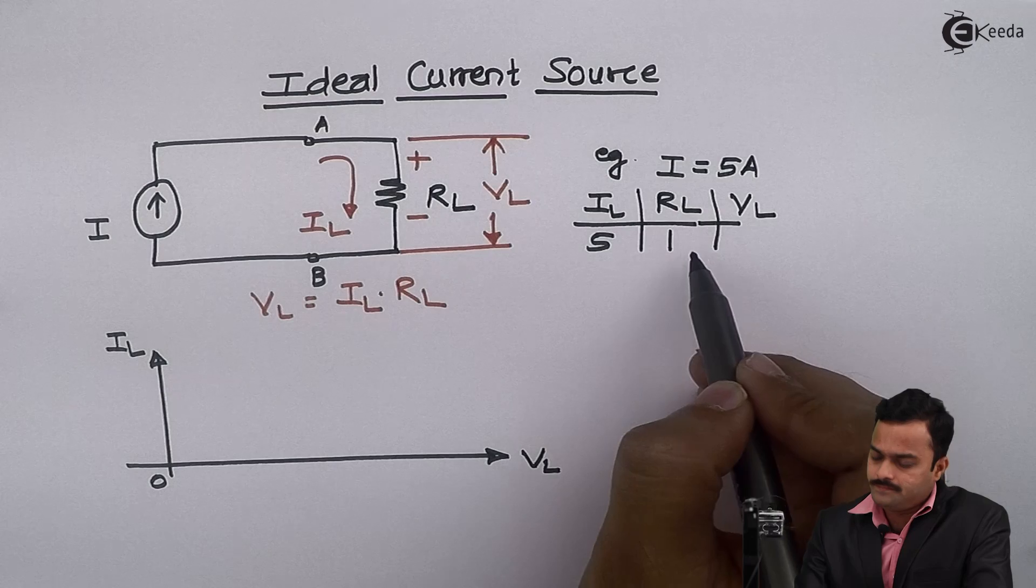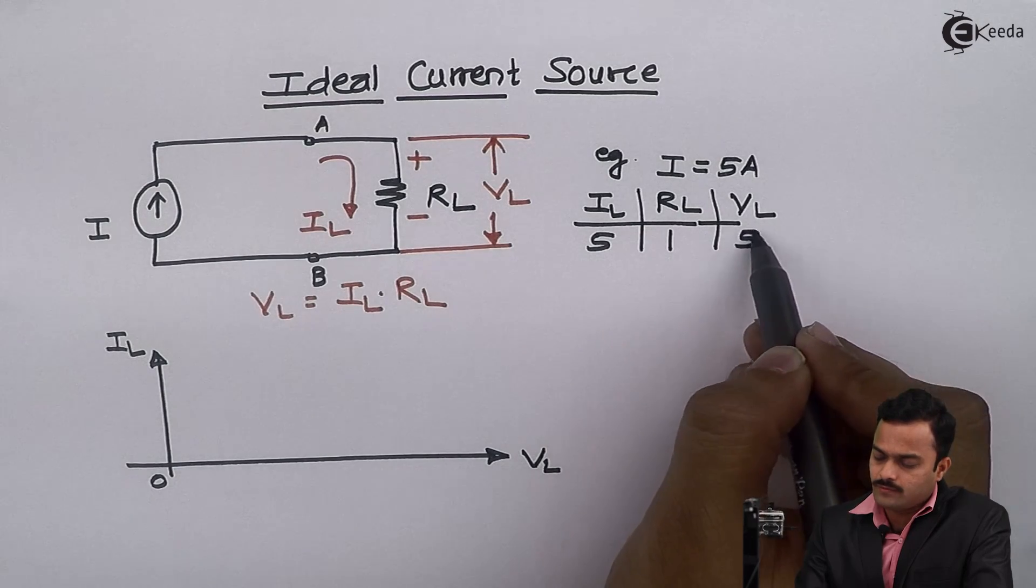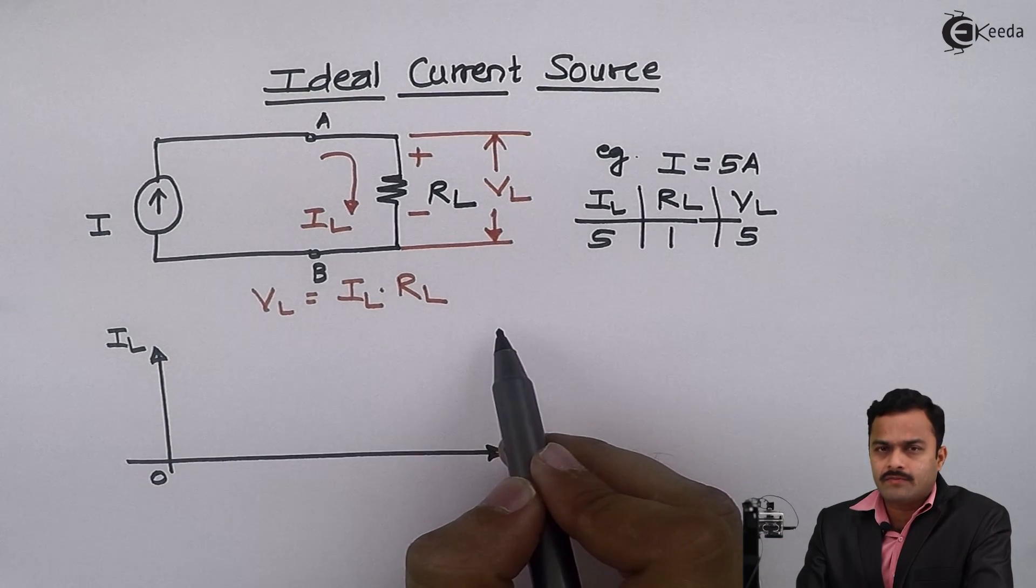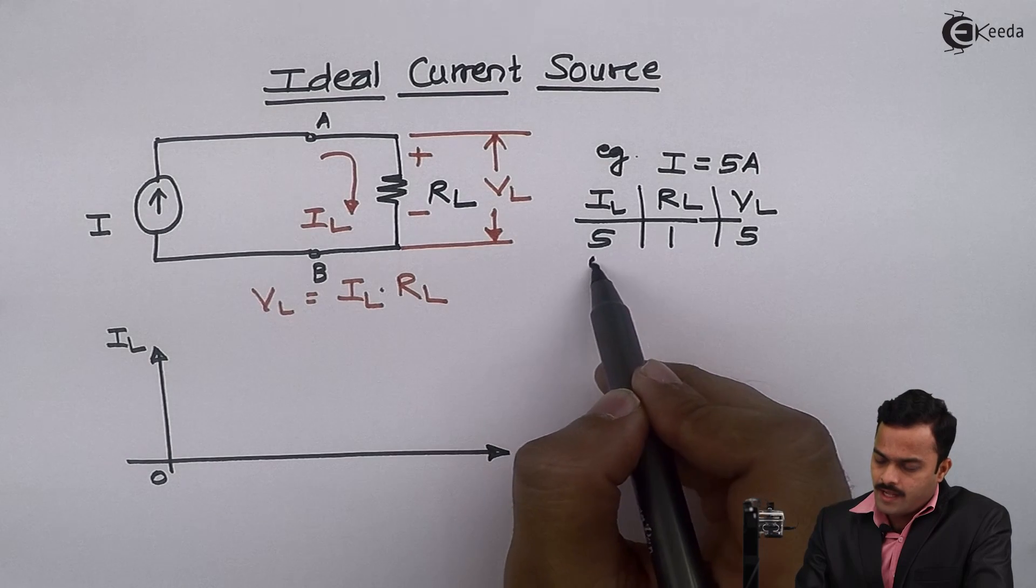So in first case, let's take RL is 1 ohm, so the VL will become 5 volt. Again for a second observation, IL will remain 5.